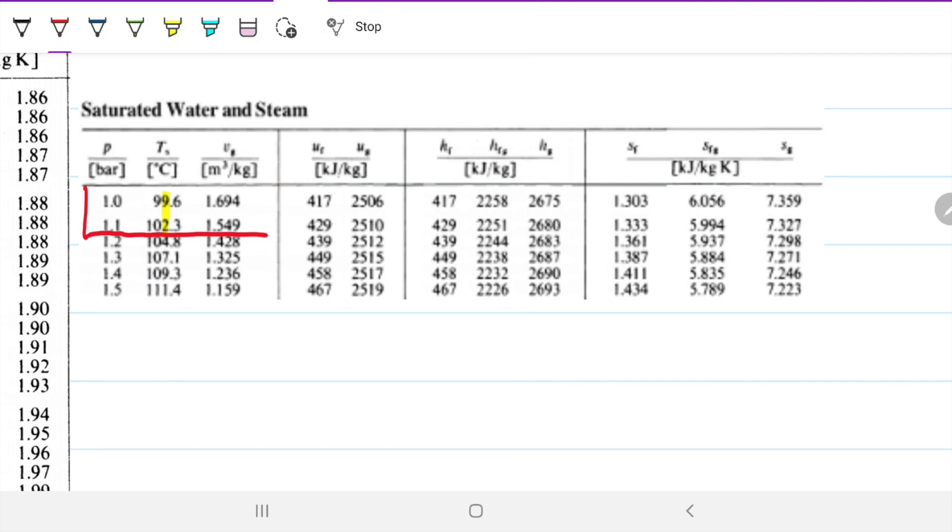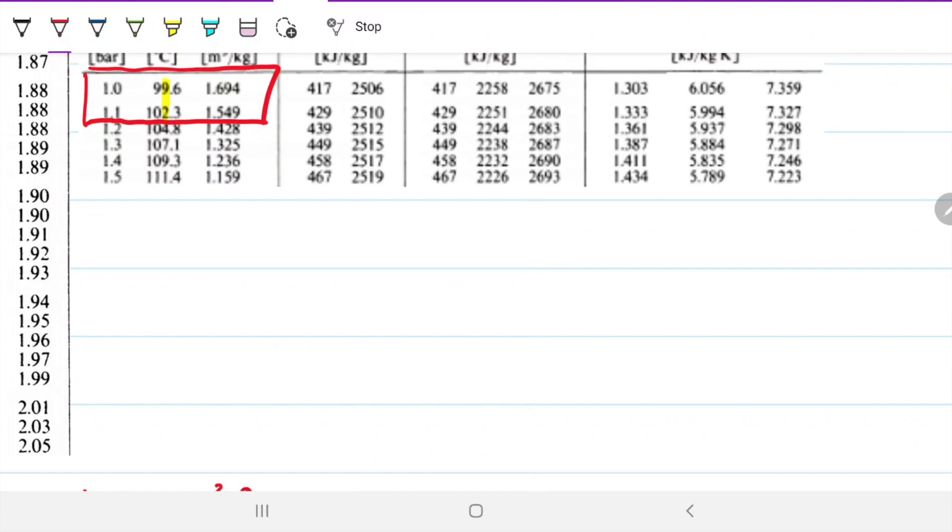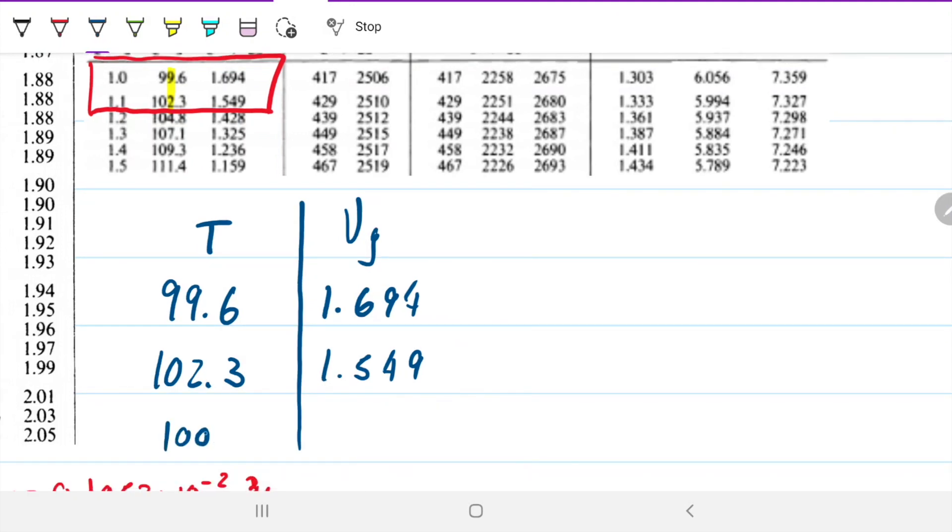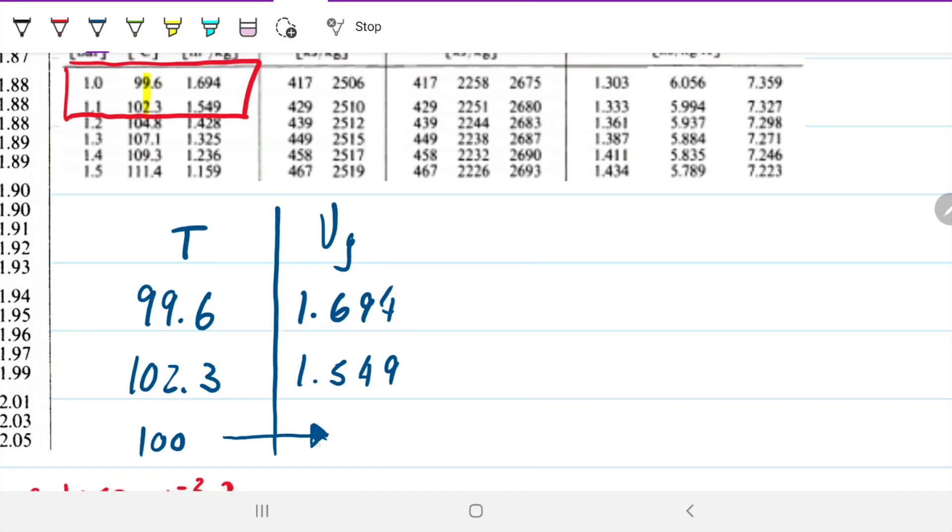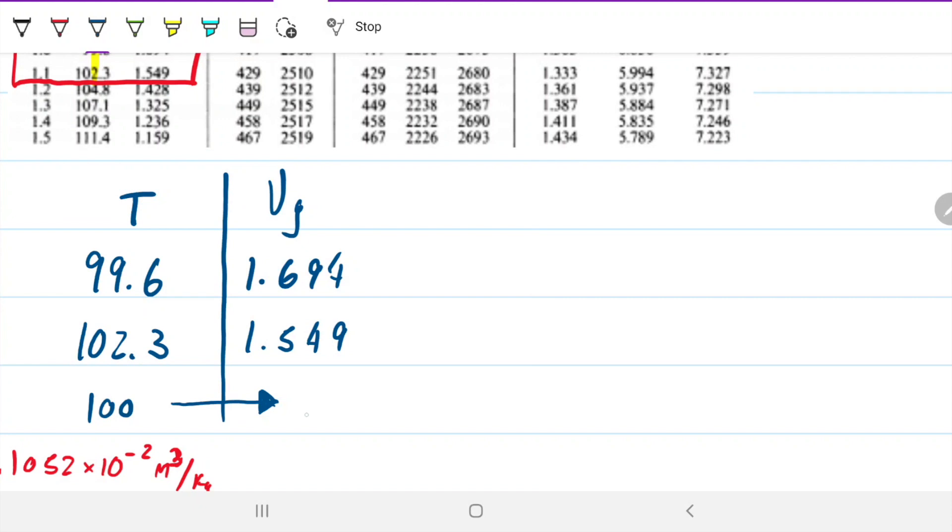The specific volume is going to be somewhere between these two values. In order to interpolate, I'll have my temperature and my specific volume for gas. At 99.6°C, I have 1.694 m³/kg. And at 102.3, I have 1.549 m³/kg. So if I'm after 100°C, then I have to do the interpolation for this value. This is 1.6725 meters cubed per kilogram.